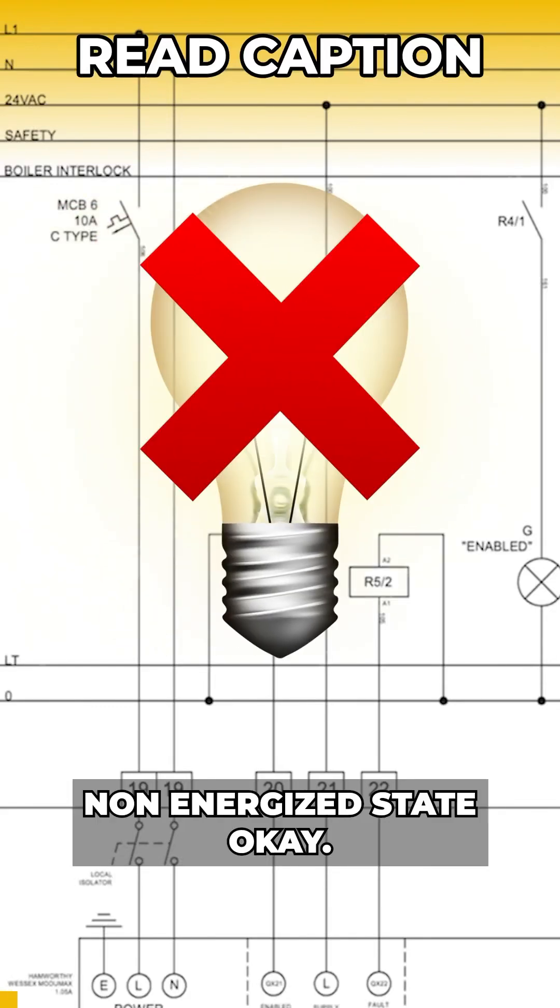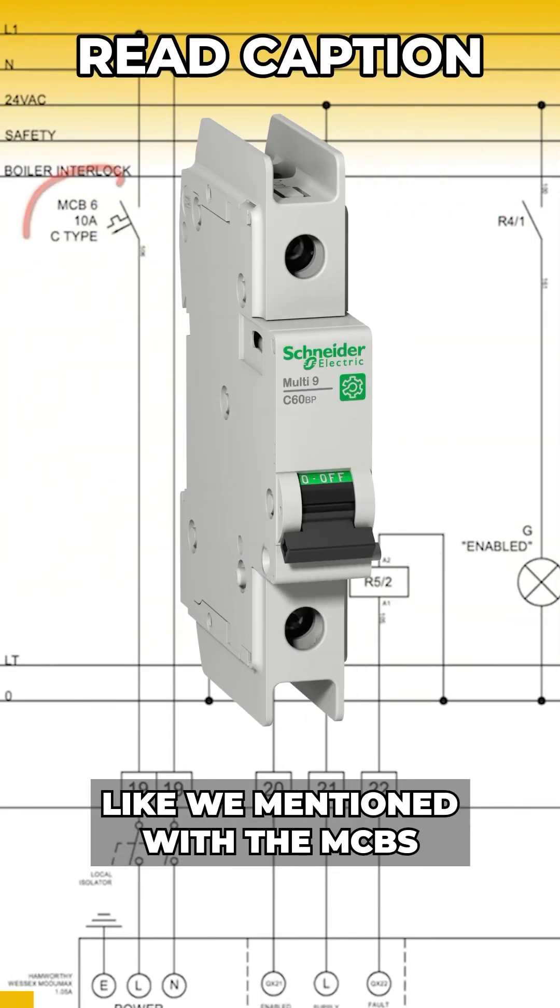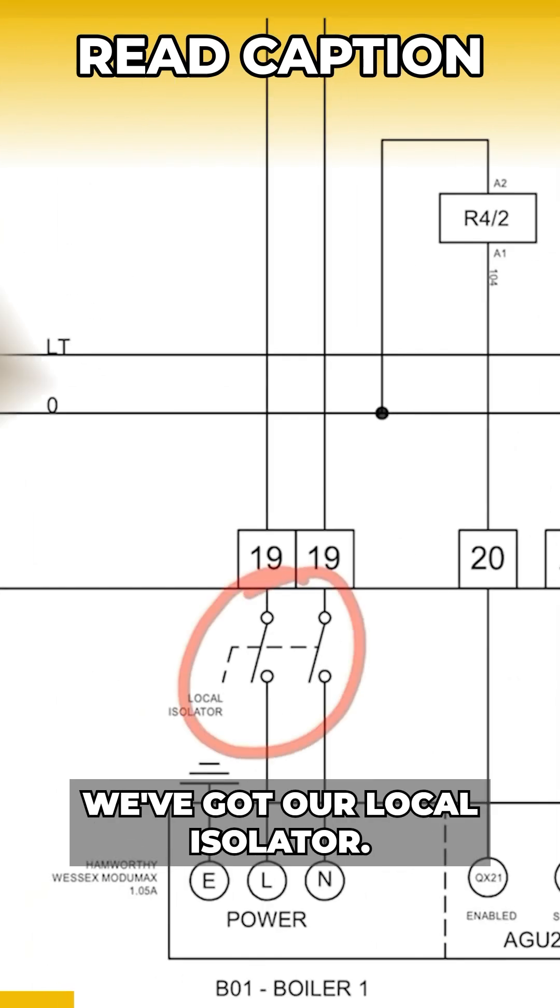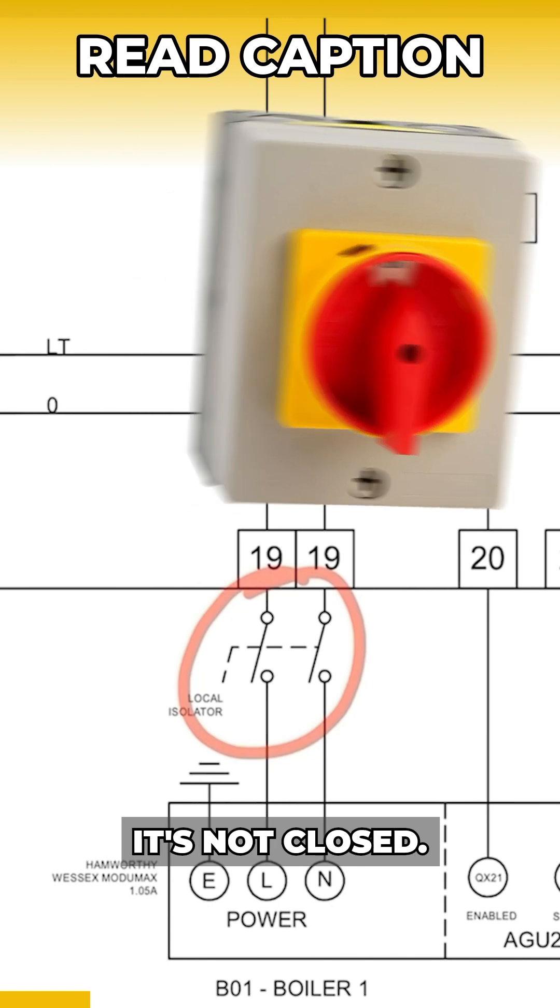Everything is drawn in this non-energized state. Like we mentioned with the MCBs, you can see there that they're open, they're non-energized. We can see down here we've got our local isolator, it's non-energized, it's not closed.